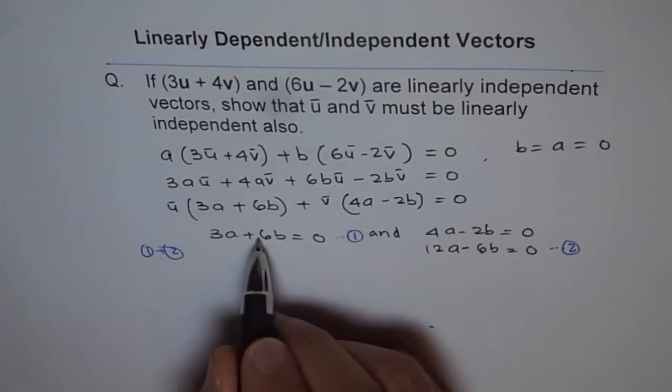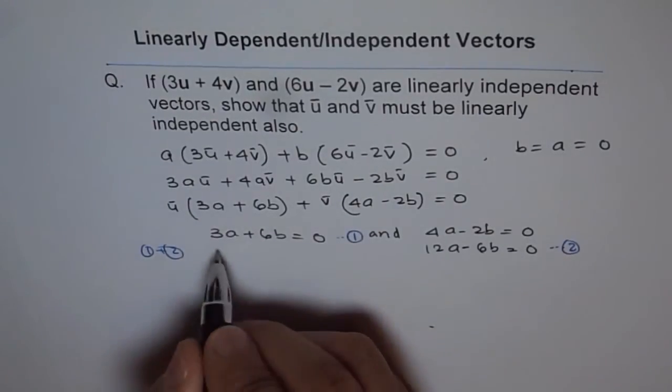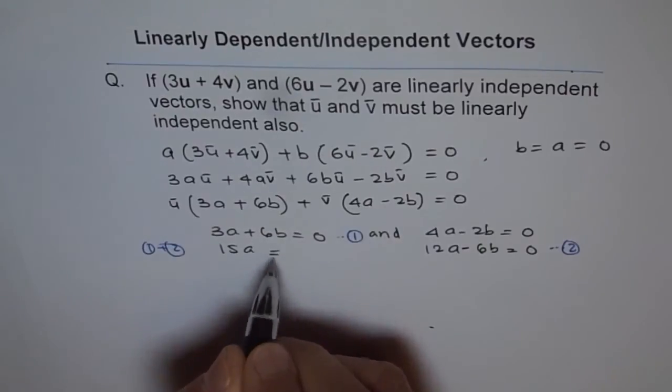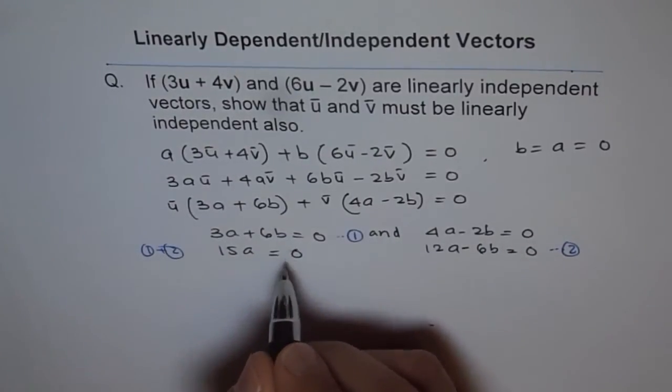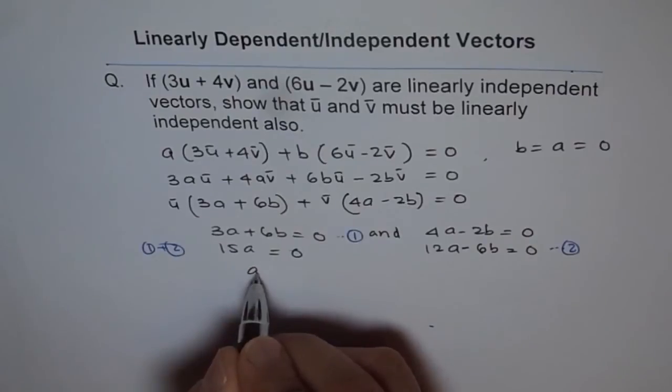We can eliminate b and get 15a = 0, or a = 0.